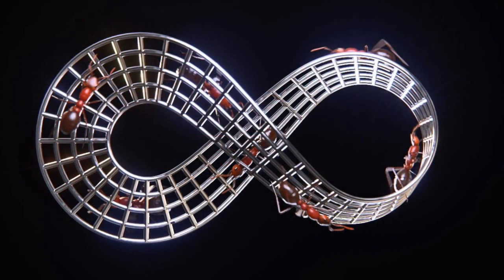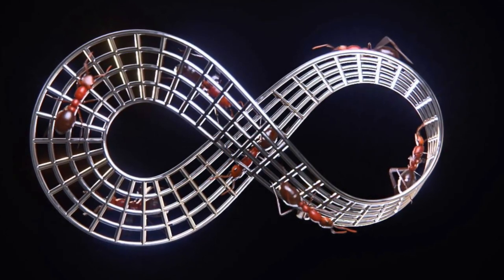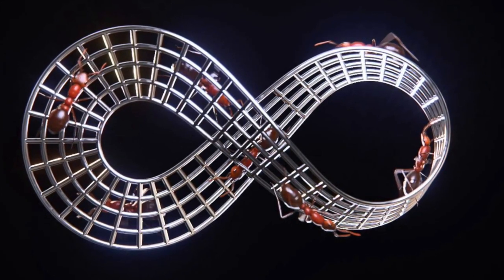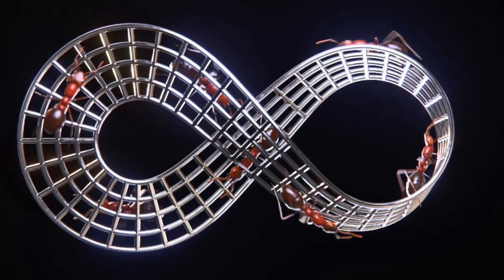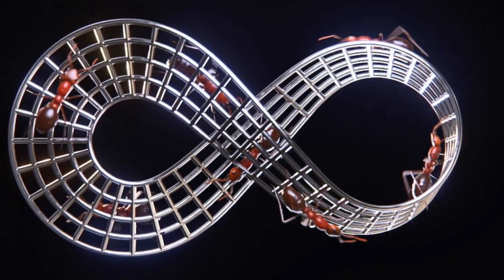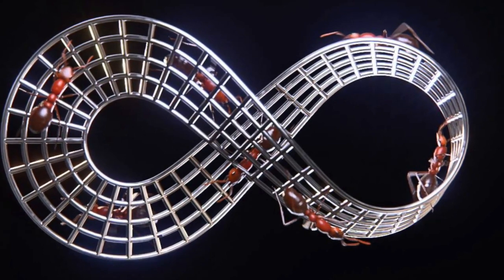The Möbius band has a non-orientable surface. In everyday terms, this means if you were an ant crawling on the surface, you wouldn't be able to distinguish one side from another. If you take a pencil and draw a line along the center of the band, you'll notice that the line runs along both sides of the loop.